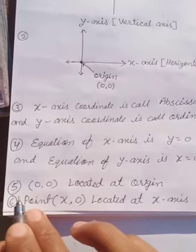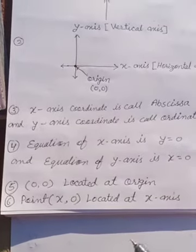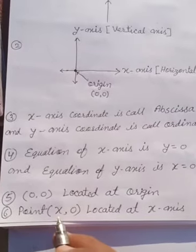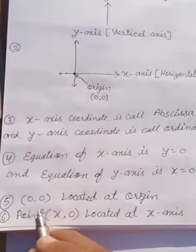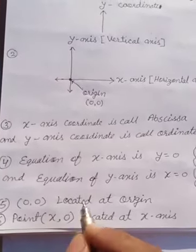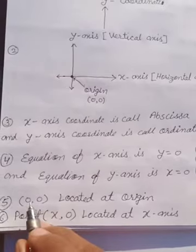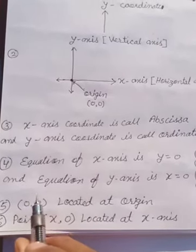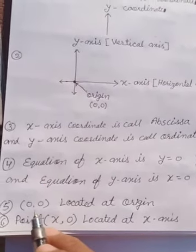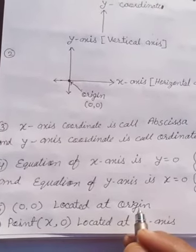These points are very important in this chapter — more than any other questions. Focus on these, make good notes, and keep them safe. Whenever I ask questions, it will be from these notes. I will ask in Monday's class, so read these notes beforehand. Point (0,0) is located at origin — I told you this earlier. If fill-in-the-blank or MCQ comes, write (0,0) located at origin — don't get it wrong.